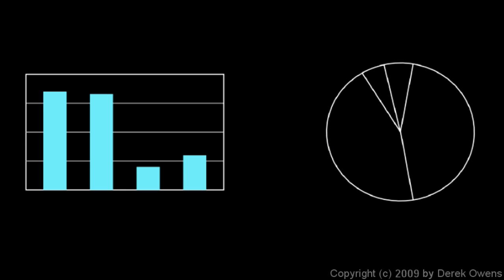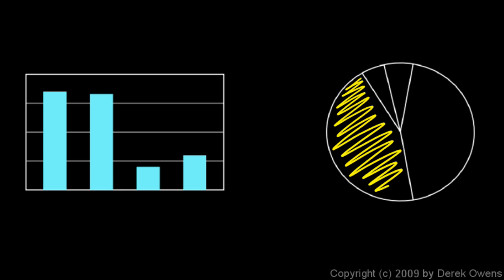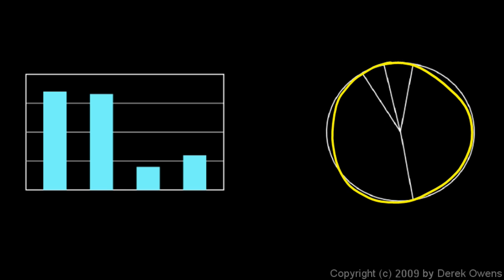If you need to compare different data points, a bar graph is usually best. The circle graph, on the other hand, is good for seeing how big one section is as a fraction of the whole. On a bar graph it's hard to tell what fraction of the entire dataset one bar represents, but on a circle graph you can see that a piece is, say, a little less than half of the whole — that information is readily visible.